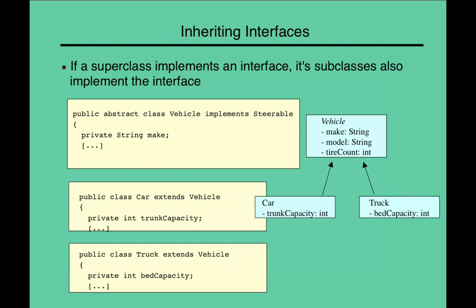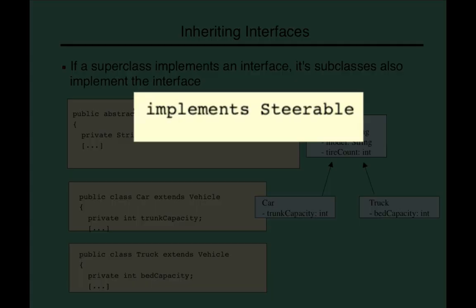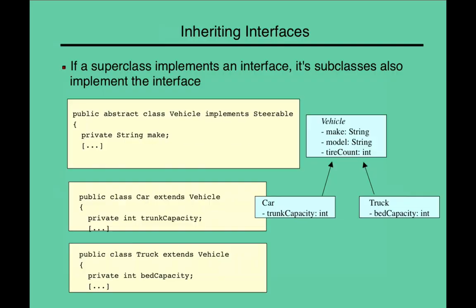So, here's another rule. For example, if a superclass implements an interface, its subclasses also must implement that interface. For instance, vehicle, it says here, implements steerable. That means the car is also steerable. That means the truck is also steerable. And they would have to have the methods inside of them called turn left and turn right. And so, there's a quick overview of what interfaces are.